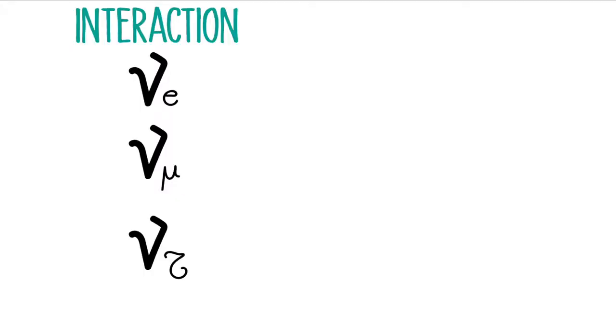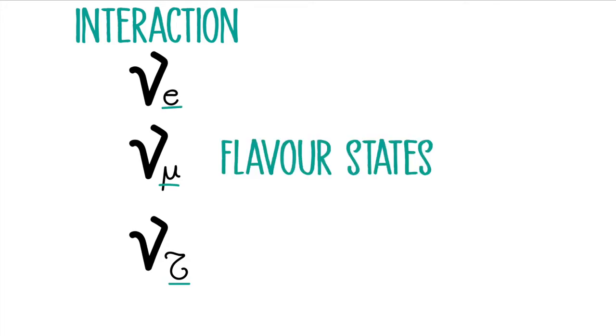So let's talk about neutrinos. Neutrinos are a special type of particle. Their mass is so small that for many years we just considered it zero. They also do not like to interact with other particles — they can go through many, many layers of lead completely unbothered. One of the most distinct characteristics about neutrinos is that they have different identities whether they are interacting with other particles or flying freely. The interaction neutrinos are characterized by the other particle involved in their creation and annihilation. These are called the flavor states.